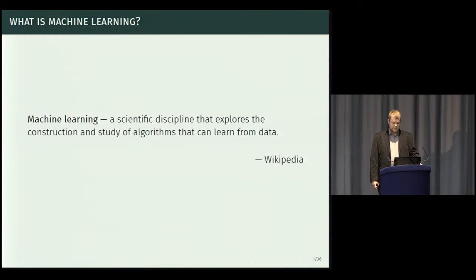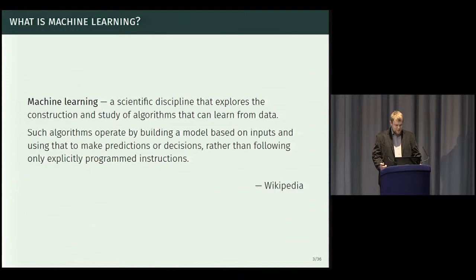Wikipedia defines it as a scientific discipline that explores the construction and study of algorithms that can learn from data. Well that explains everything, thank you. Seriously though, the main point of machine learning is that instead of just following explicit instructions given by the programmer, we also use a pre-built model defined from input data to make our decisions and predictions.